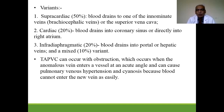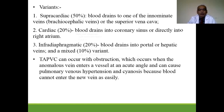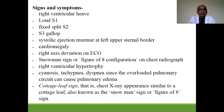TAPVC can occur with obstruction when the anomalous veins enter the vessel at an acute angle, causing pulmonary venous hypertension and cyanosis at birth. Findings include loud S1, wide split of the second heart sound, gallop rhythm, systolic ejection murmur, cardiomegaly, and right axis deviation on ECG.